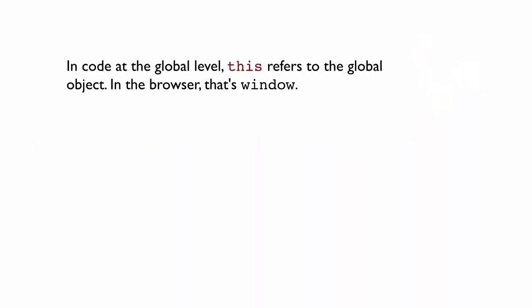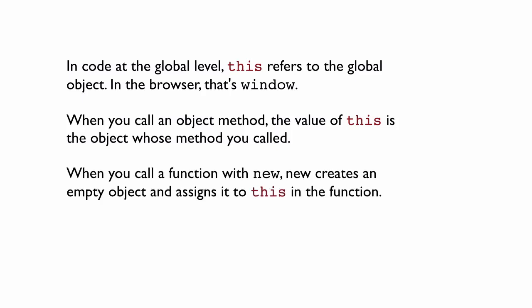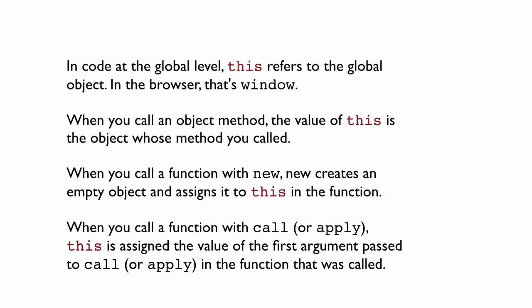First, whenever you're writing global code — code at the top level — `this` refers to the global object, which in the browser is the `window` object. This rule also applies to the value of `this` in a function, unless you're calling the function as a method, or you've explicitly changed the value of `this` using `call` or `apply`. Second, when you call an object method, `this` is the object whose method you called — and remember, this applies to event handlers on element objects too. Third, when you call a function with `new`, new creates an empty object and assigns that object to `this` in the function. Finally, when you call a function with the `call` method, the value of `this` in that function is the value supplied as the first argument to `call`. So using `call` and `apply` are ways you can control the value of `this` in a function.